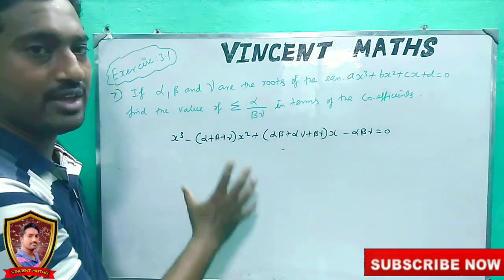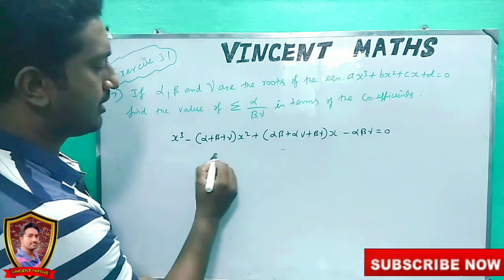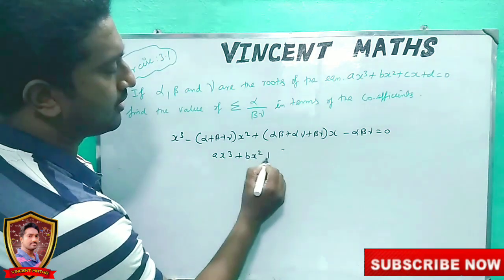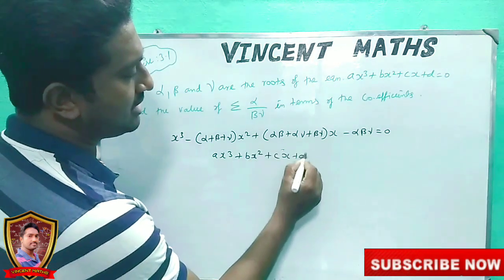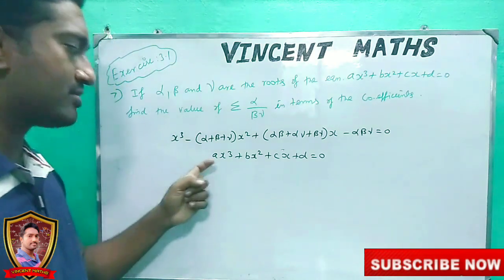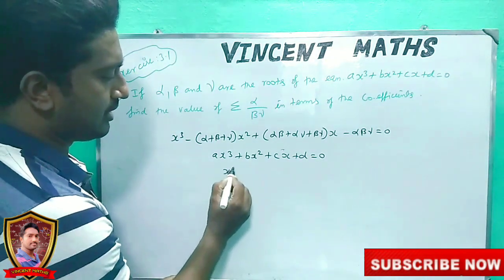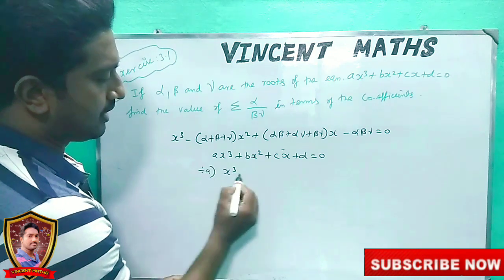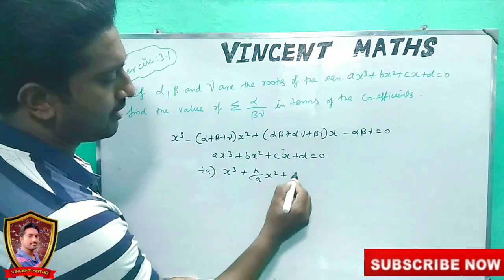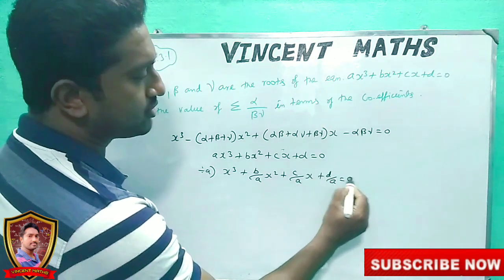The cubic equation gives us: ax³ plus bx² plus cx plus d. The leading equation is one. If we divide by a, we get x³ plus (b/a)x² plus (c/a)x plus (d/a) equal to zero.